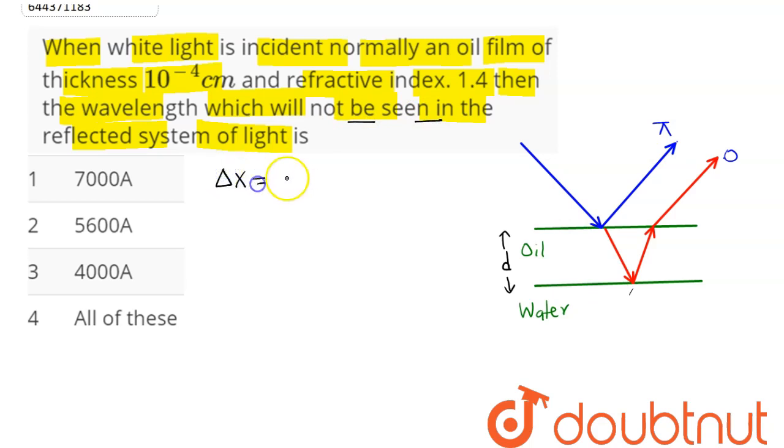The path difference comes to be, if the thickness of oil is d which is given as 10^-4 cm, equal to 2μt cos r, where r is the refraction angle. This will be equal to (n+1)λ.